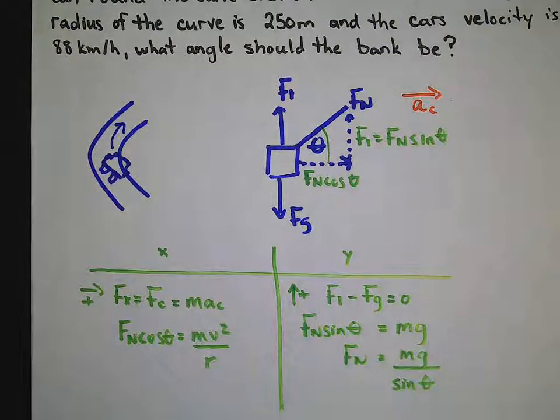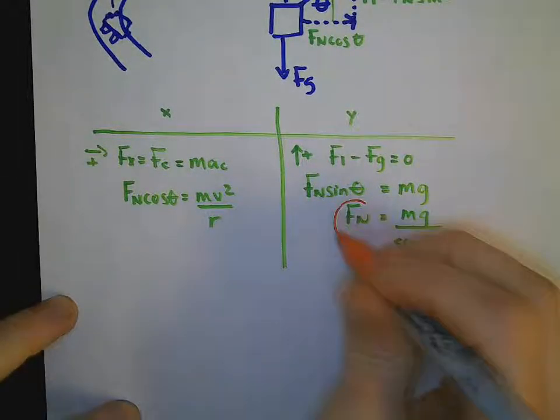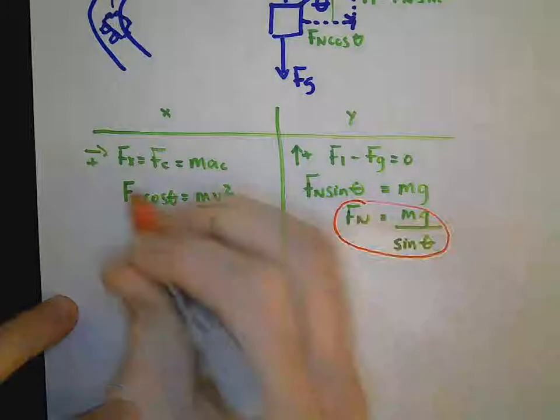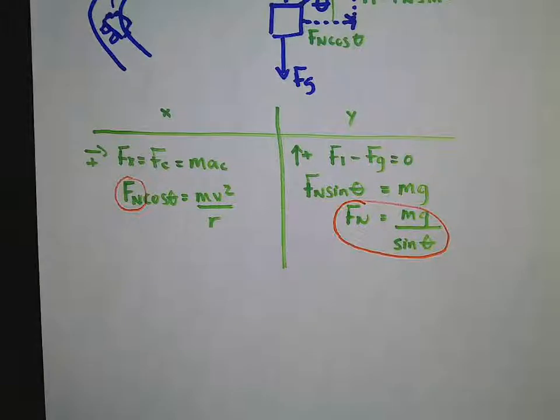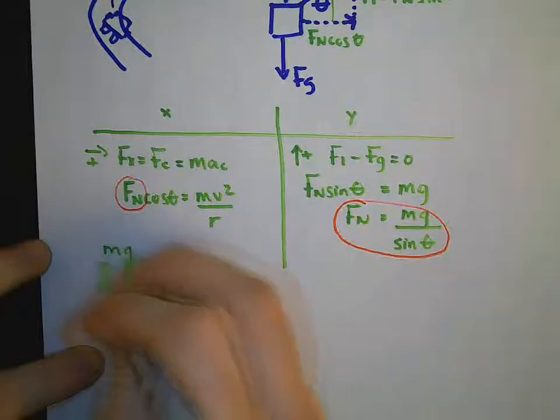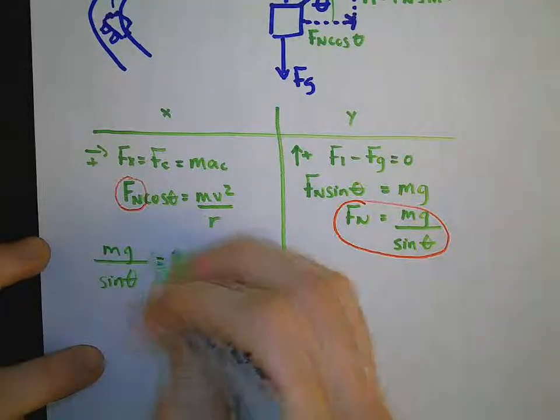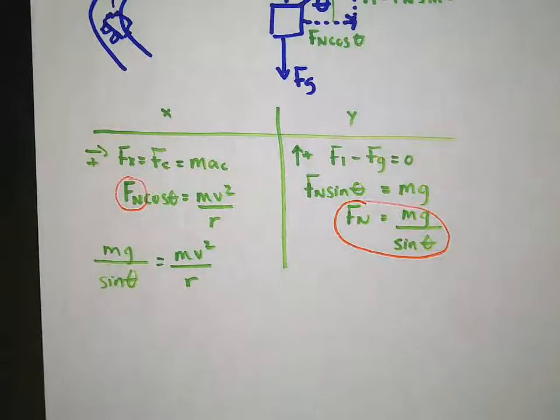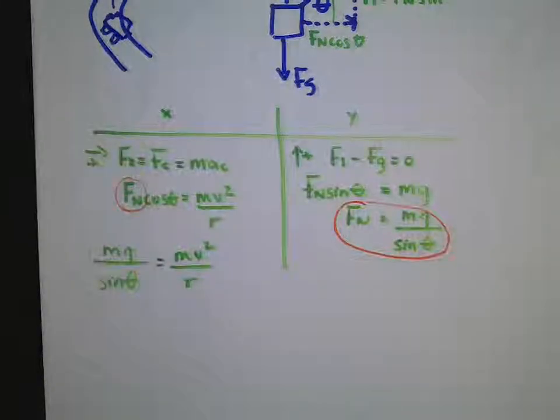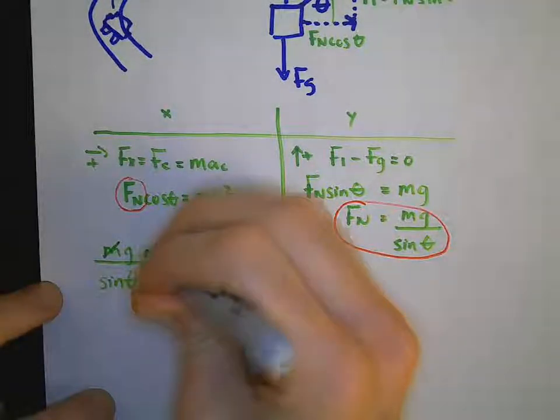This is extremely handy, because I now have an expression to substitute in for Fn on my x component. So therefore, mg over sine theta will be equal to mv squared all over r. We will see that we can do some cancelling out to help us solve. M's on each side of the equal sign. Beautiful. I did forget to write cos theta there as well. Let me do that right now for you.